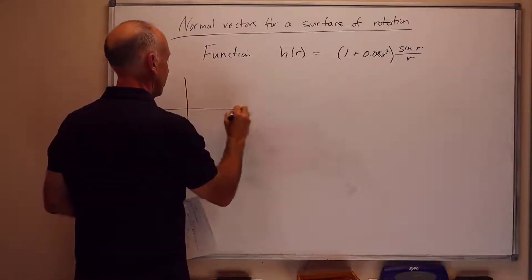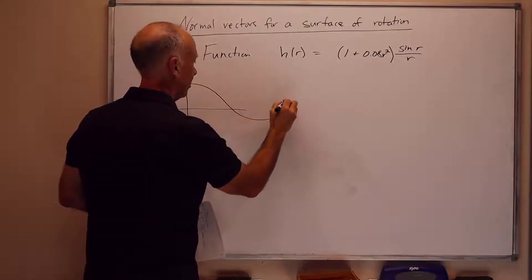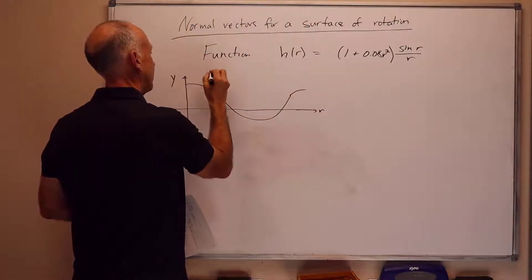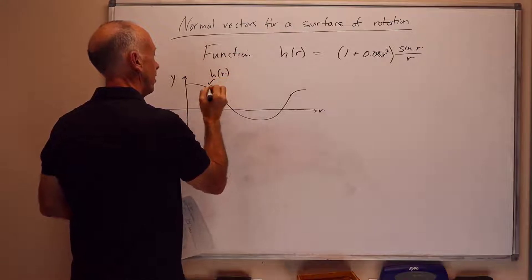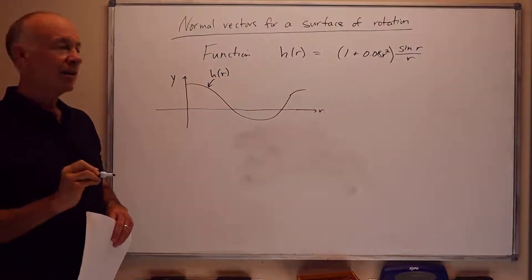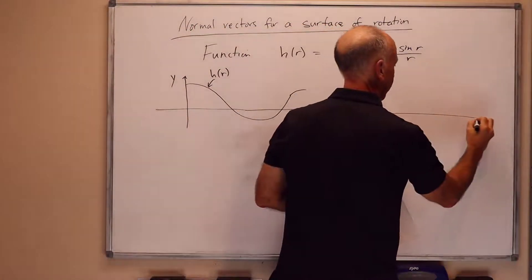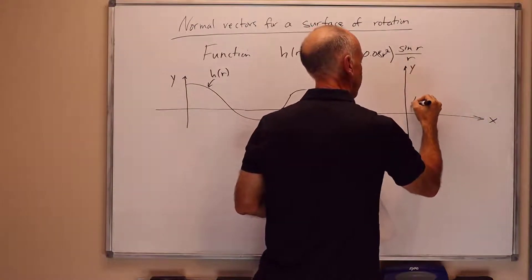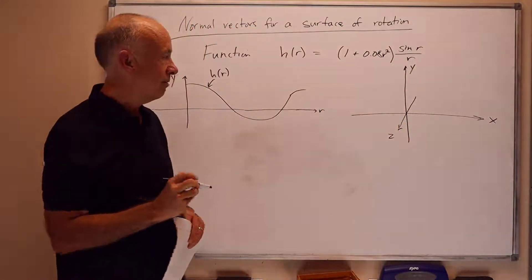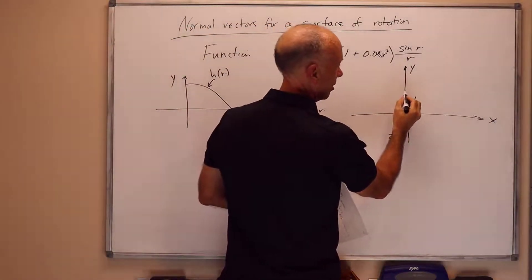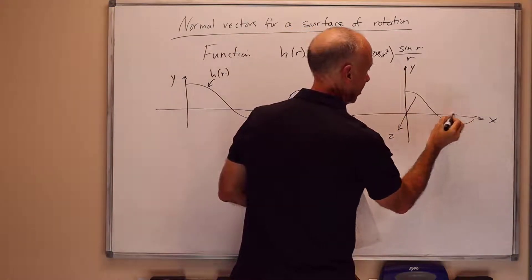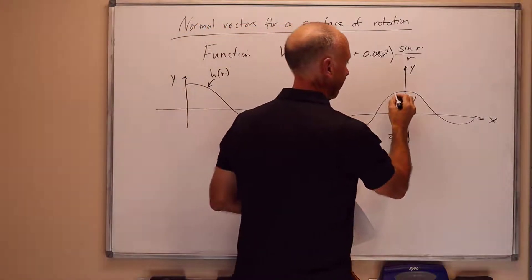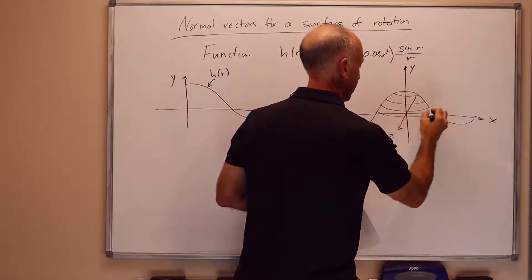In this particular example, it looks something like this. Here's the r-axis, the y-axis, h(r) is this graph here, and we're rotating it around the y-axis. So in three-space, here's the x-axis to the right, y-axis upward, z-axis is pointing out of the board towards the viewer. We're rotating the surface h around the y-axis, letting r be the distance from the y-axis. So the surface looks something like this.